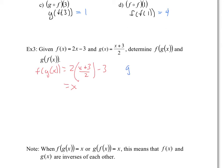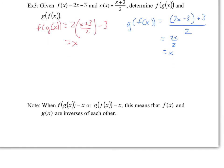Now g of f of x: I'm plugging in f, so 2x minus 3, into g. So you have (2x minus 3 plus 3) over 2. The minus 3 plus 3 cancel out, and you have 2x over 2, which gives us x. This is not by accident that both are equal to x — this is a special case. Whenever this is true, it means that f of x and g of x are inverses of each other.